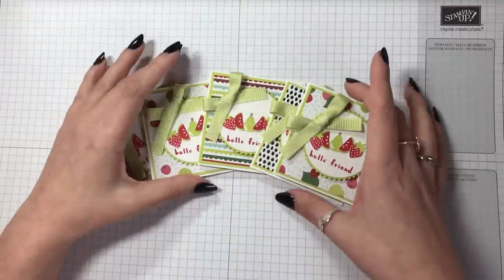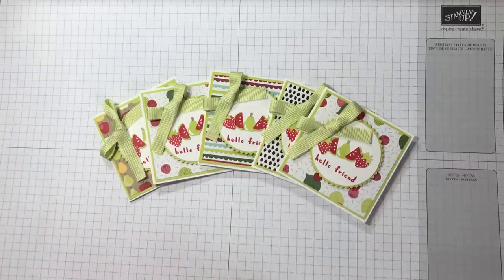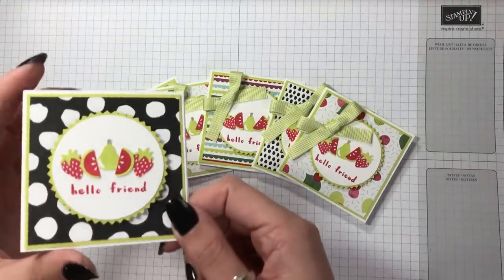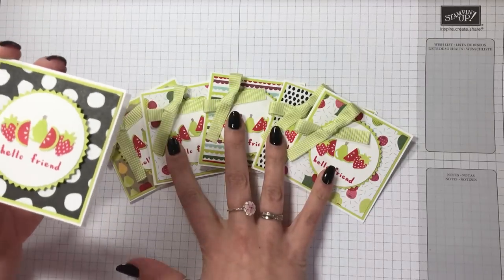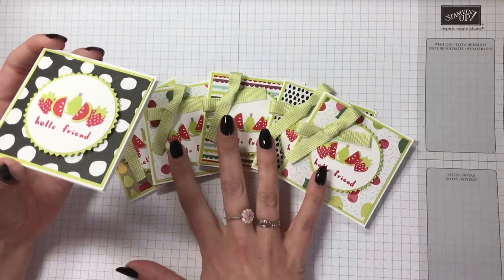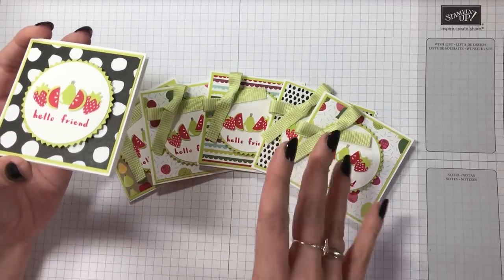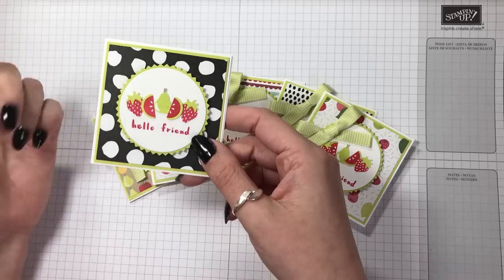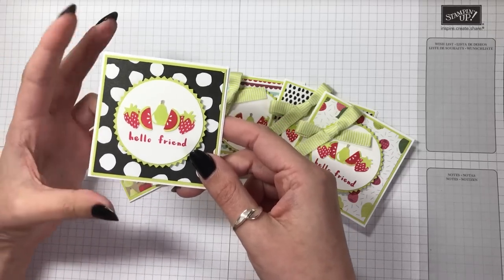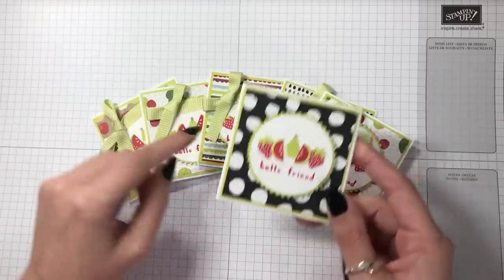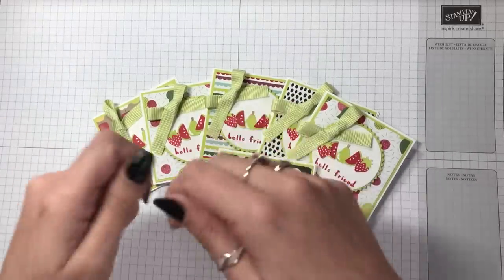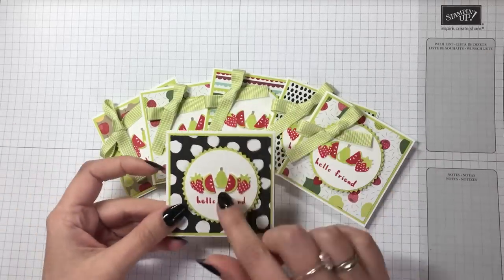For On Stage I did exactly the same but I didn't put the bows on because I made about 60 of these for the team retreat. There was 55 I think going and I made a few spares, and then for On Stage I made a further 50. By the time I got to the end I was so fed up of putting bows on.